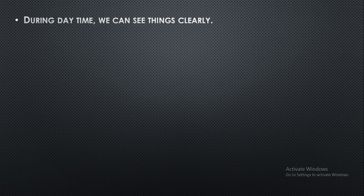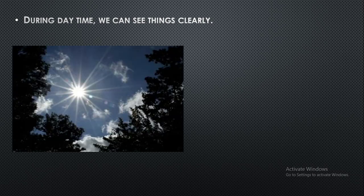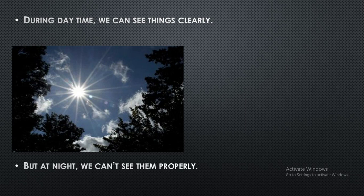Because of proper light during daytime, we can see things clearly. During daytime, as there is sunlight, we can see the things around us in a proper manner. But at night, as it is dark and there is no light, we can't see things properly.